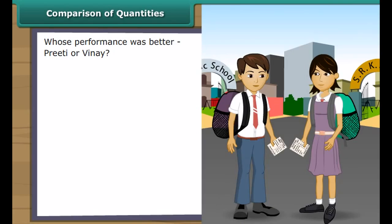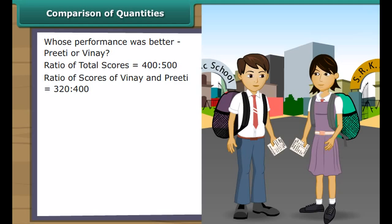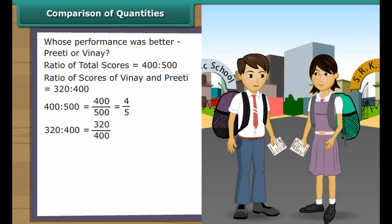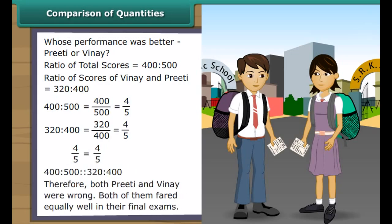Proportion. Earlier in this lesson, we heard Preeti and Vinay argue about their respective performances in the final exam. Let us sort their argument out with the help of proportion. Expressing the two total scores as 400 is to 500, and the scores of Vinay and Preeti as 320 is to 400. Reducing them to their lowest terms, 400/500 equals 4/5 and 320/400 equals 4/5. The two ratios are in proportion. Therefore, both Preeti and Vinay fared equally well in their final exams.